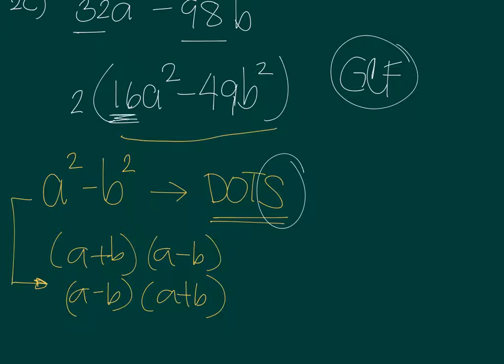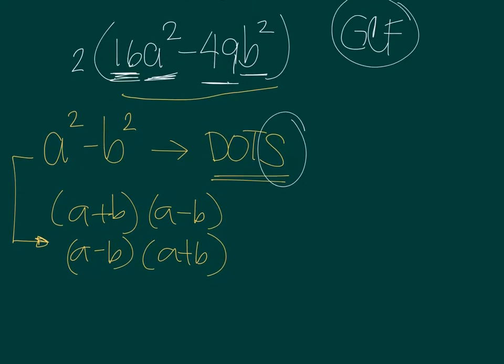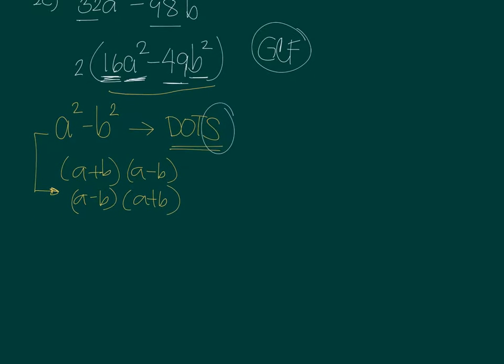A raised to 2 because it is raised to 2, it's a perfect square. 49 is a perfect square and then B squared, of course, is a perfect square. So since it follows A squared minus B squared, then we could continue with the factoring by having two binomial factors.